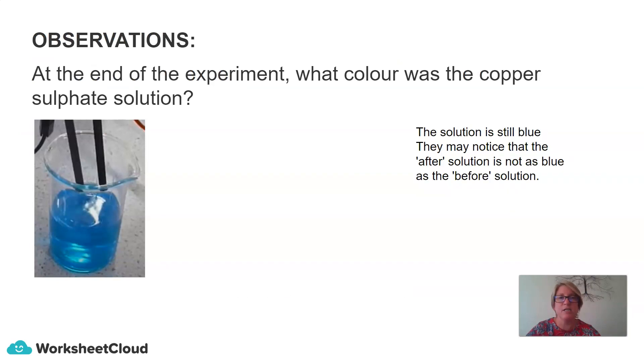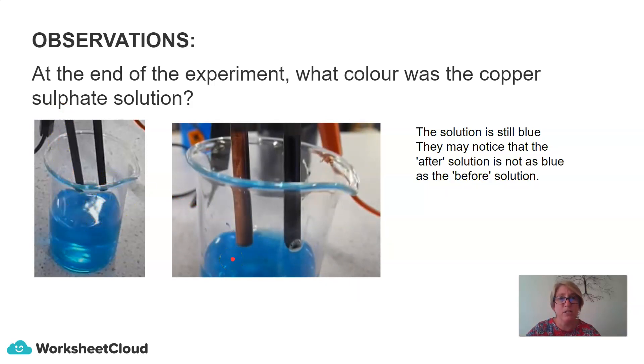So at the end of the experiment, what color was the copper sulfate solution? So here was the copper sulfate solution at the beginning of the experiment, and here was the copper sulfate solution at the end of the experiment. So the solution is still blue. Some of you may notice that the after solution is not as bright, brilliant blue as the before solution.